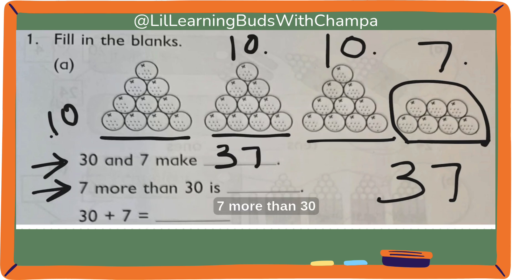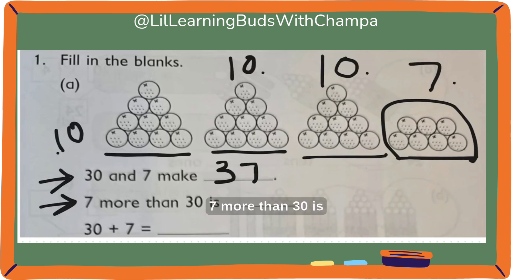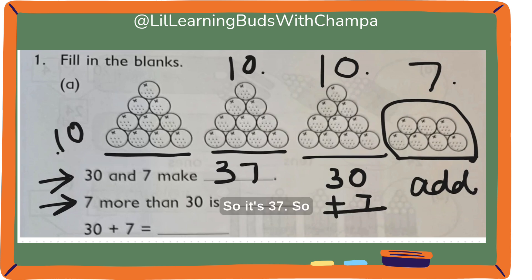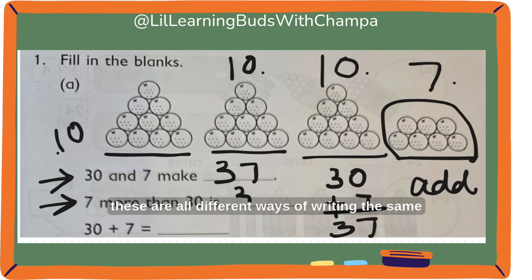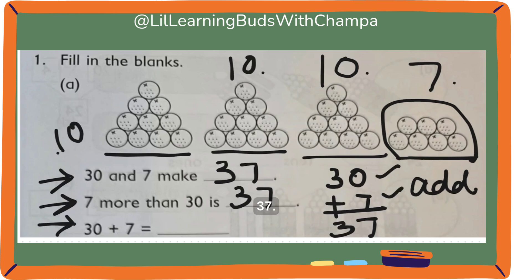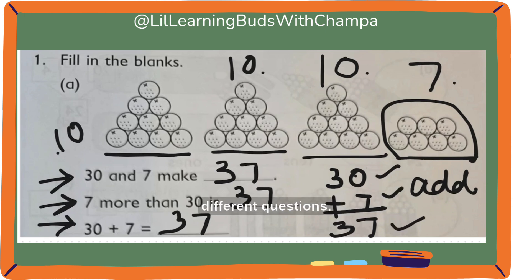7 more than 30 is 30 plus 7. More than means it's always addition. So it's 37. These are all different ways of writing the same answer. Next: 30 plus 7. So, 30 plus 7 makes 37. Same answer, different ways, different questions.